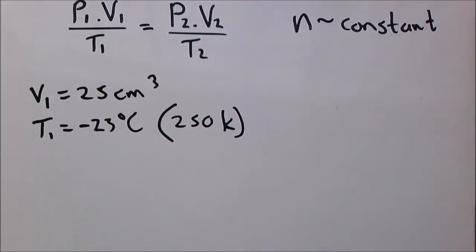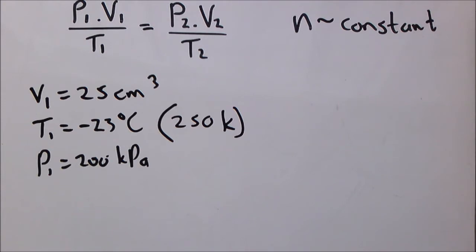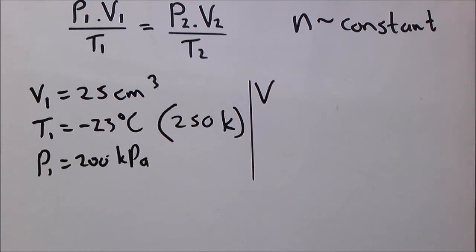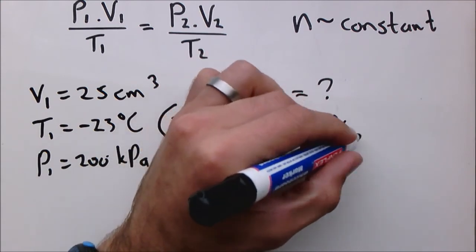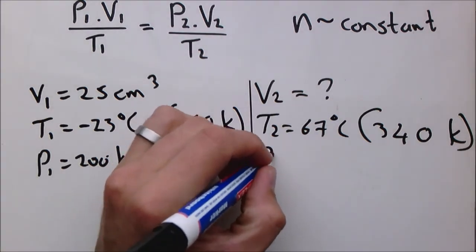Then the pressure as stated is 200 kilopascal. Now they ask us to calculate the volume of the gas if the temperature is increased to 67 degrees Celsius and the pressure decreases to 80 kilopascal. So V2 is unknown. T2 is 67 degrees Celsius, and we immediately convert that into Kelvin by adding 273, which gives 340 Kelvin. The pressure was decreased to 80 kilopascal.